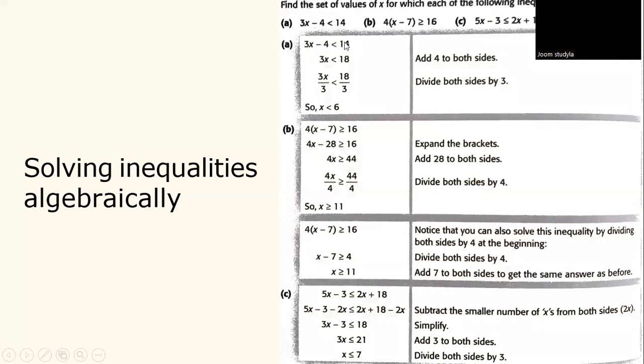This is another example to solve this problem. 3x minus 4 less than 14. By looking at this, you have to add 4 to both sides. 3x minus 4 plus 4 less than 14 plus 4. In this case, we have 14 plus 4, so we have 3x less than 18. And then divide both sides by 3. 3x divided by 3 less than 18 divided by 3. Now we have the value of x is less than 6.